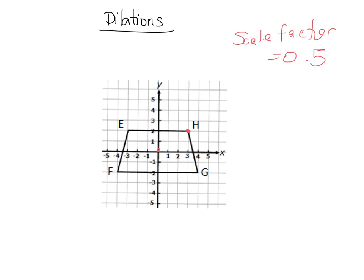So for example the coordinates of H is 3 comma 2. That means the new image, let's call it H prime, will be half of 3 is 1.5 and half of 2 is 1. So our new image will have a point at 1.5 comma 1 right here. So we can do the same thing for each and every one of our vertices.